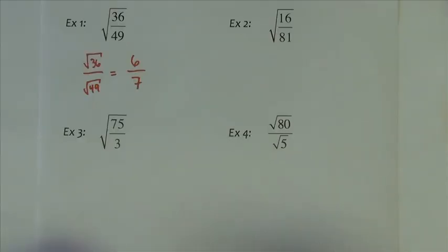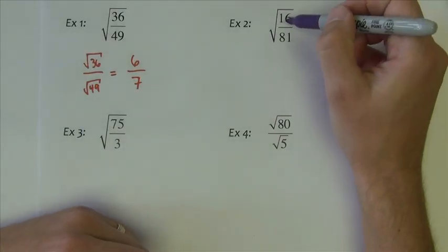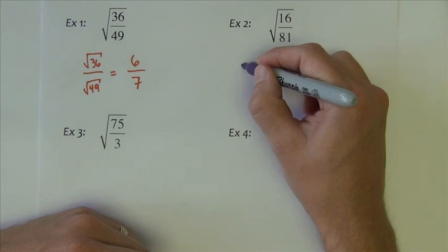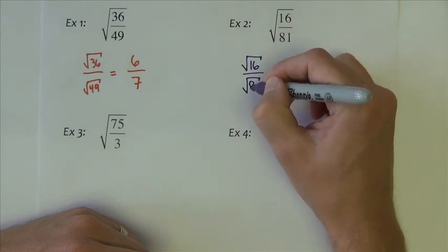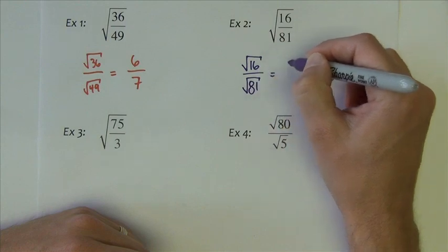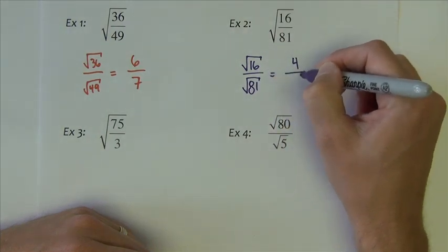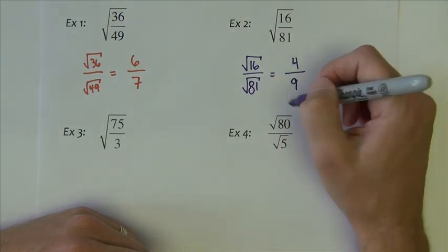The second one, I look at the numbers underneath the radicals, 16 and 81, and I recognize those as perfect squares. So I'm going to split this up. 16 square roots to 4, 81 square roots to 9, and that's done.